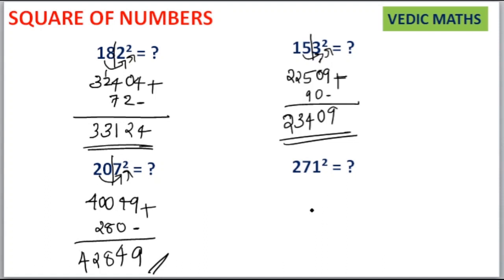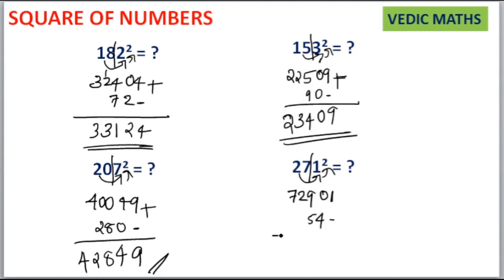Next is 271 squared. Separate it as 27 and 1. Then 1 squared is equal to 01 — write it as a 2-digit term. 27 squared is equal to 729. Then 27 into 1 is equal to 27, and 27 into 2 is equal to 54. Leave the unit place, write 54 here, then add. Your answer is 73441.